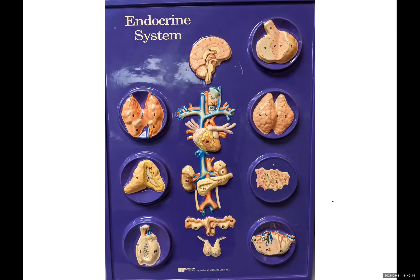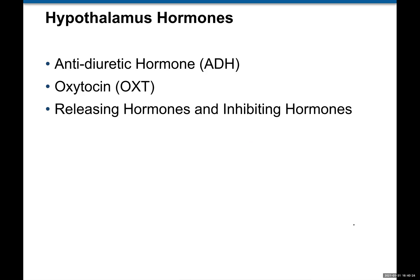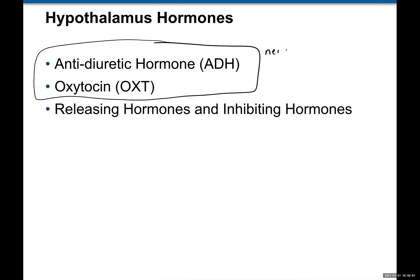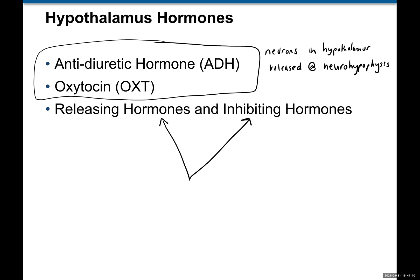Let's look at the hypothalamus more closely and list out the hormones it produces. We're going to see antidiuretic hormone, abbreviated ADH, and oxytocin, abbreviated OXT, as actually being produced by neurons in the hypothalamus but released at the neurohypophysis. The hypothalamus is also responsible for making what are called releasing hormones or inhibiting hormones — we can collectively call these regulating hormones. These regulating hormones are in charge of the adenohypophysis.